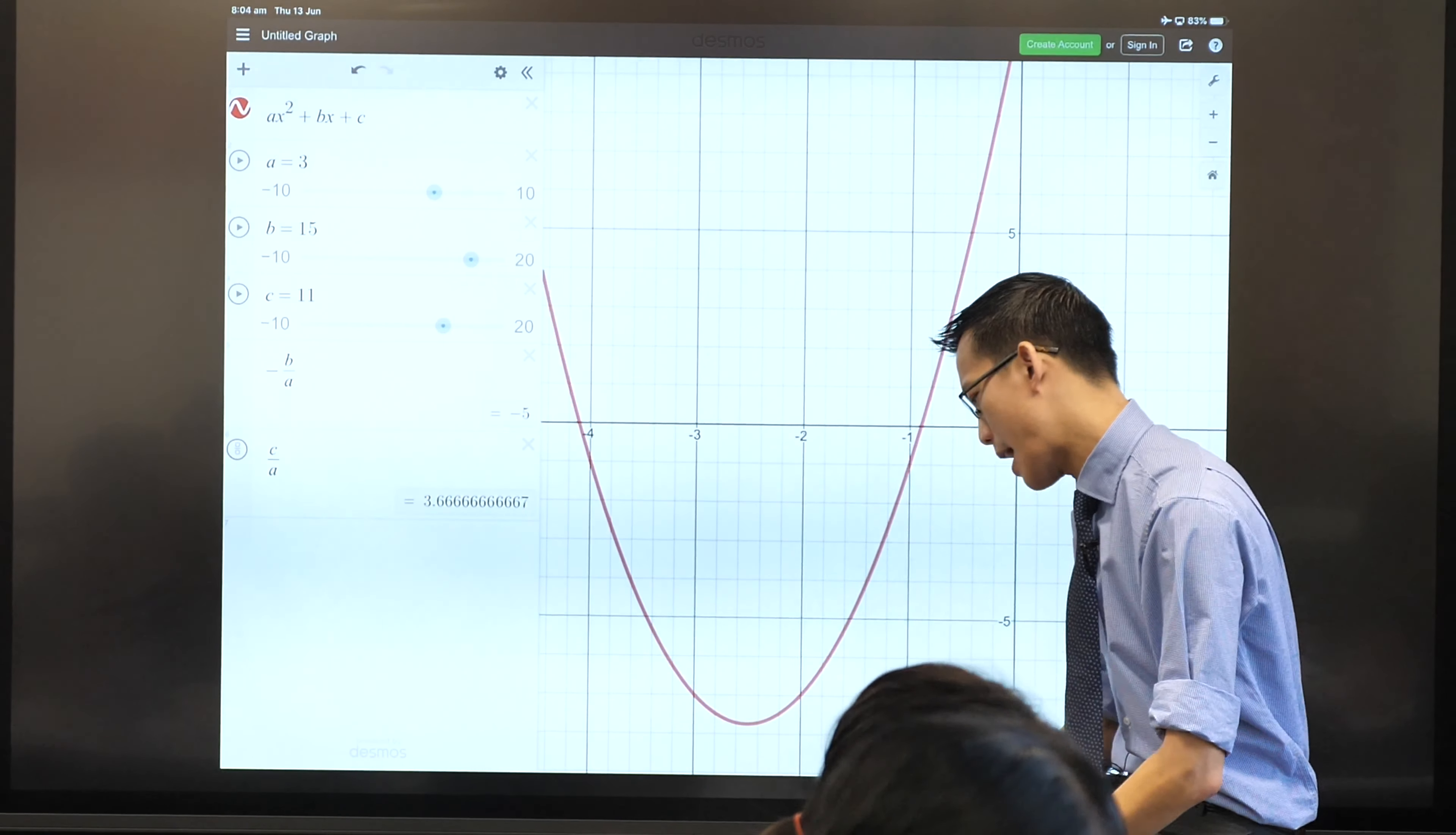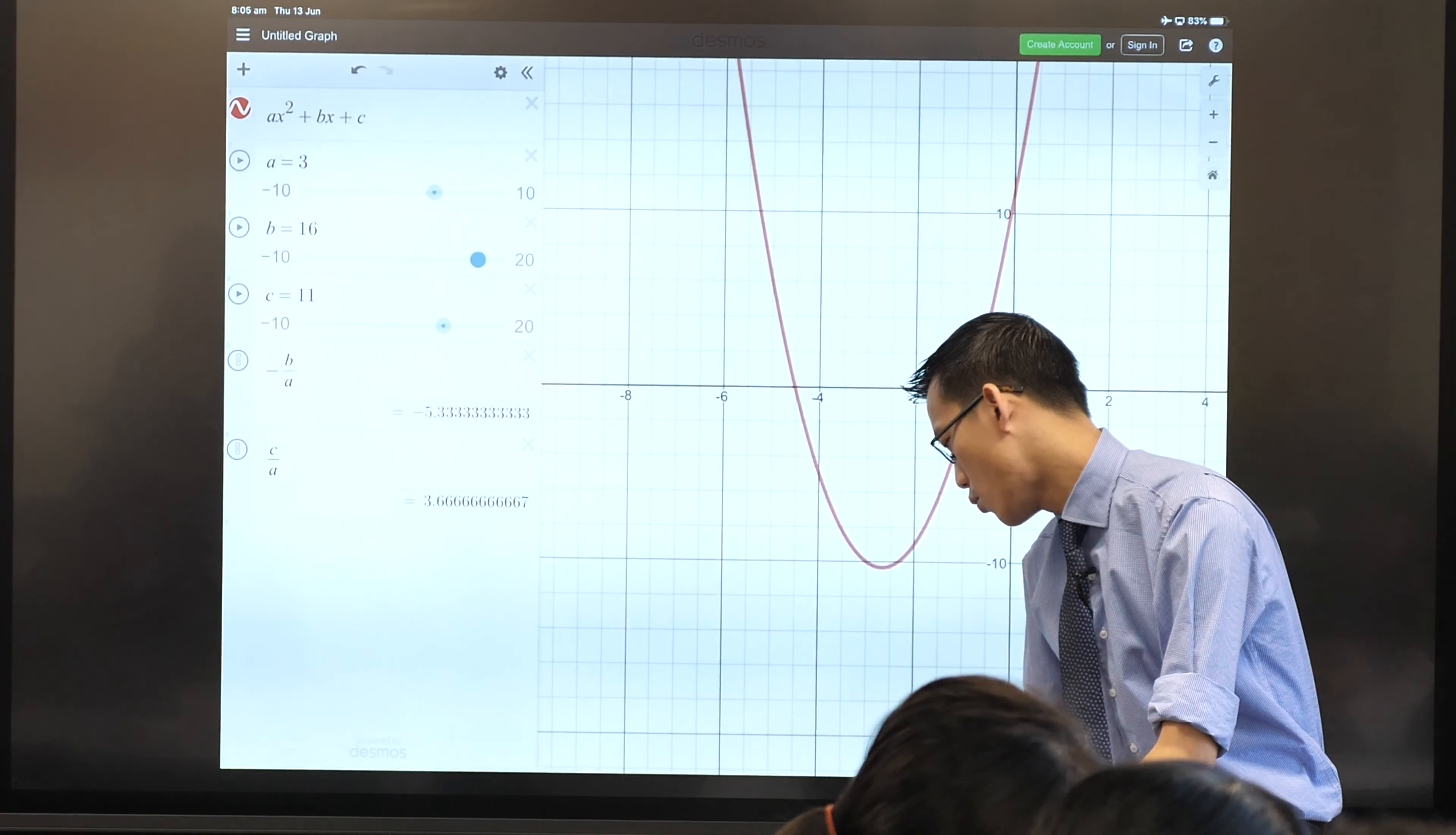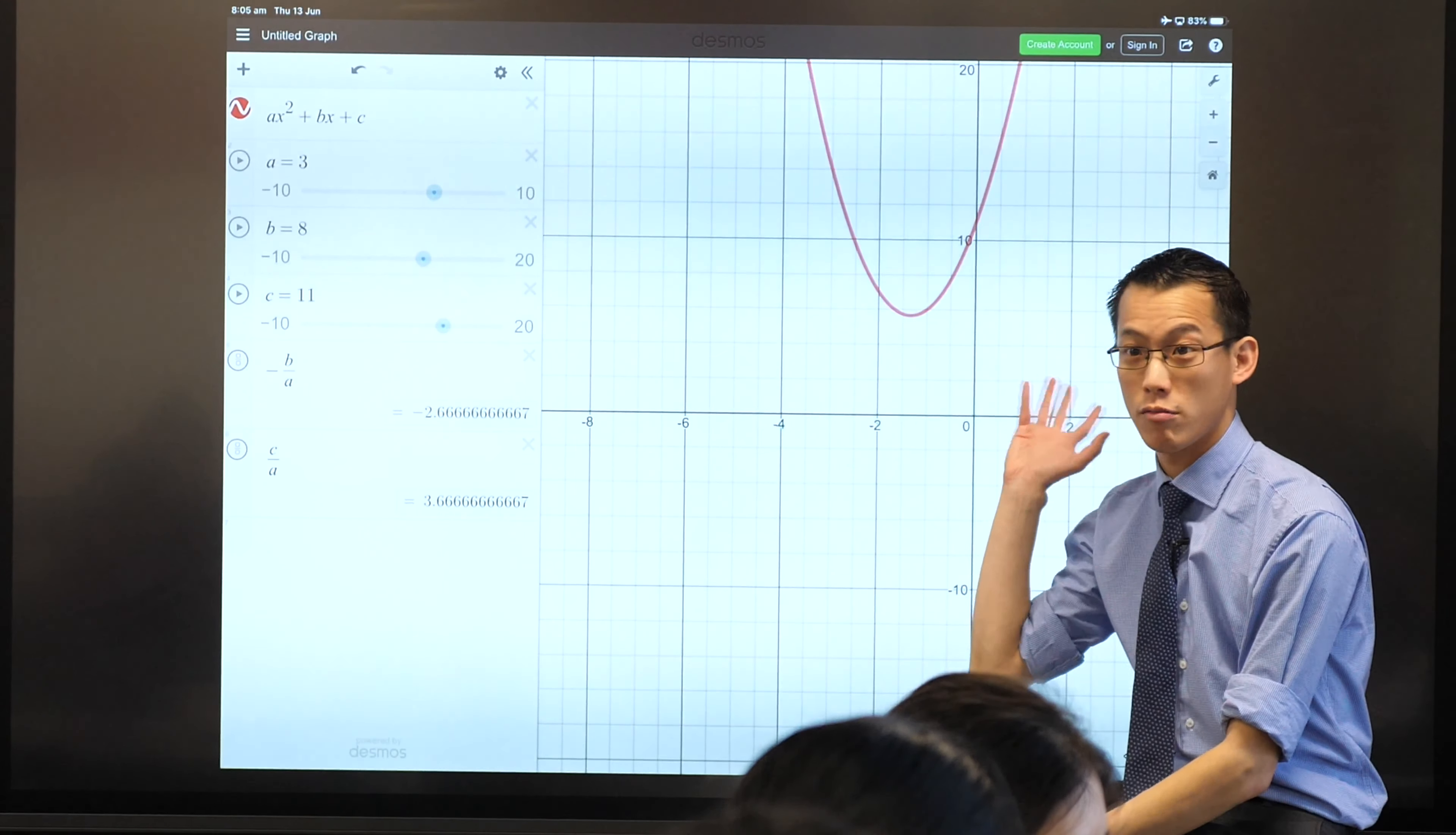Go fiddle with b for a minute, can you fiddle with b, what happens? You're going to get a change in your parabola. Slide around b and see what you get. Now what I'm really interested in is, take b and make it a little bit lower, make it a little bit lower. What I want you to do is make it low enough that your parabola goes up above the x-axis. Why do we care about this, why is this interesting?